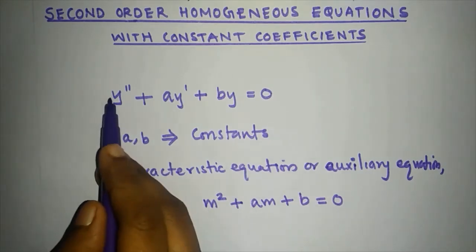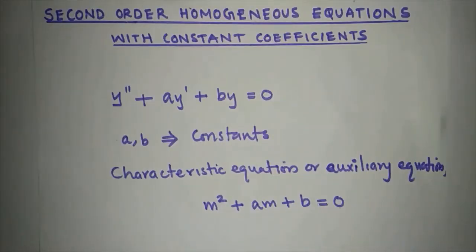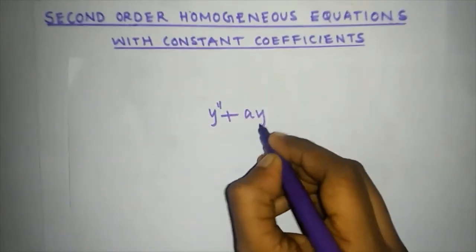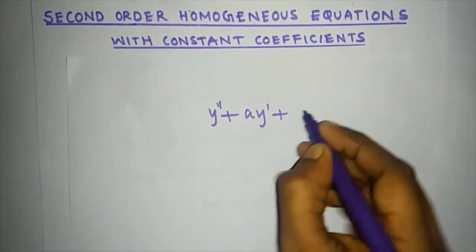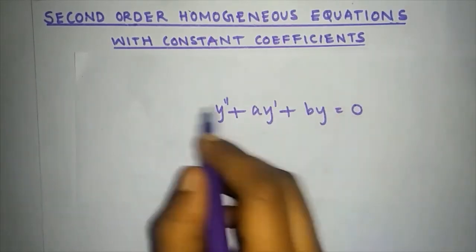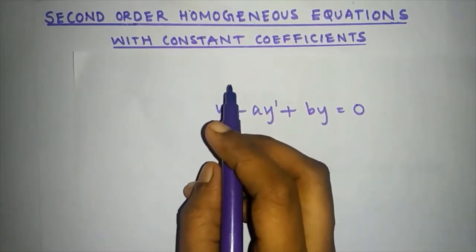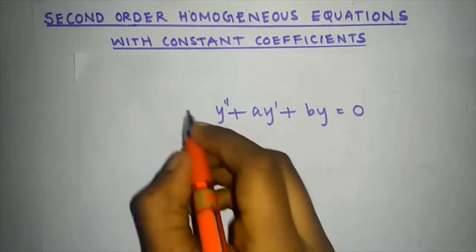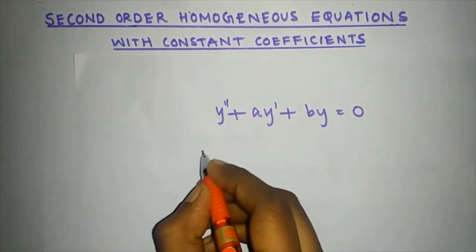Here, y'' has coefficient a and y' has coefficient b. Any equation in this case, we will check the characteristic equation. So, y'' plus a·y' plus b equals 0 — this is the form.